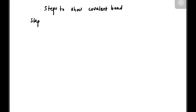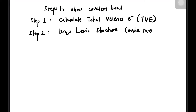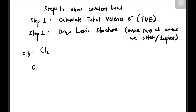Now let's learn how to draw covalent bonds. The first step is to calculate the total valence electrons (TVE), then draw the Lewis structure, and make sure all atoms are octet or duplet.